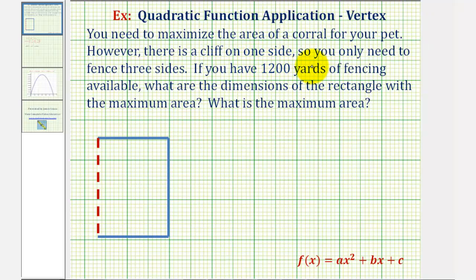You need to maximize the area of a corral for your pet. However, there is a cliff on one side, so you only need to fence three sides of the corral. So if this is the corral, let's assume this red dashed line here would be the cliff, so you don't have to fence this side of the rectangle.